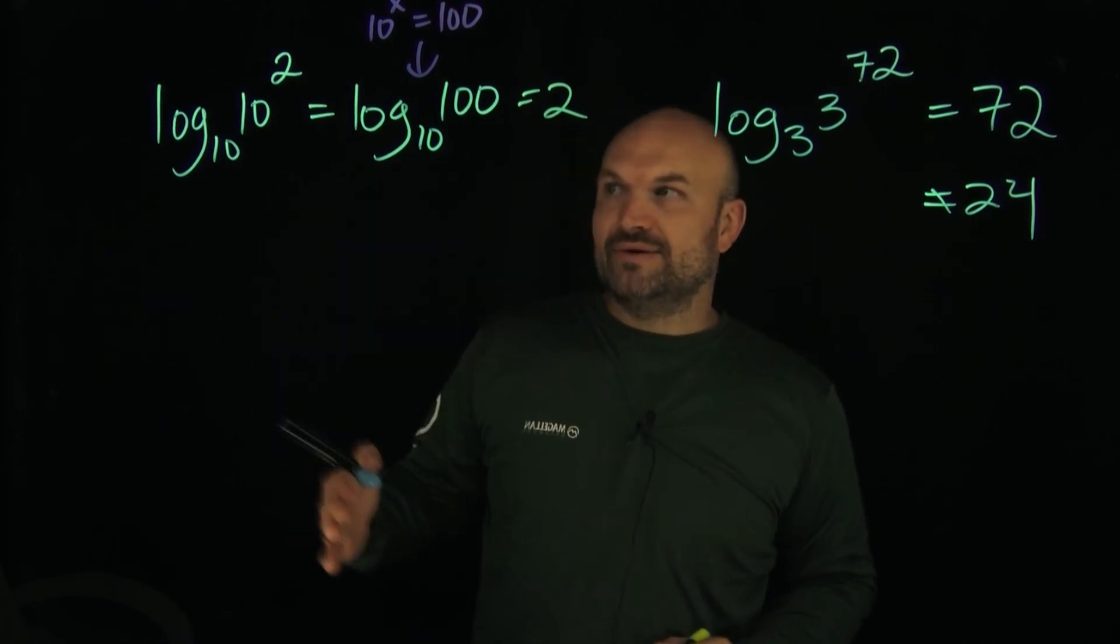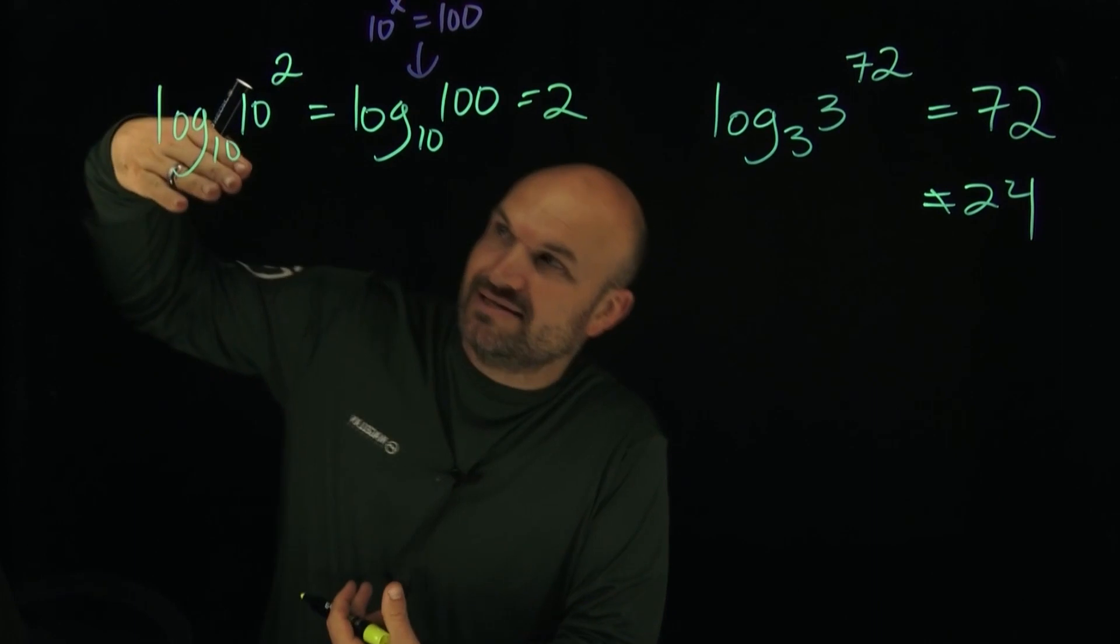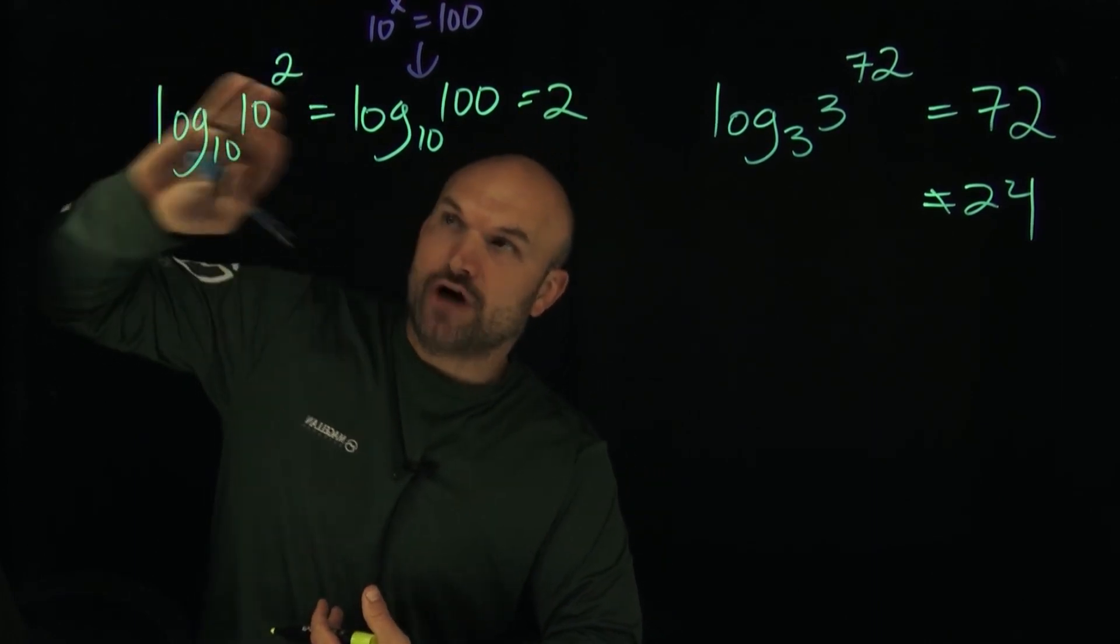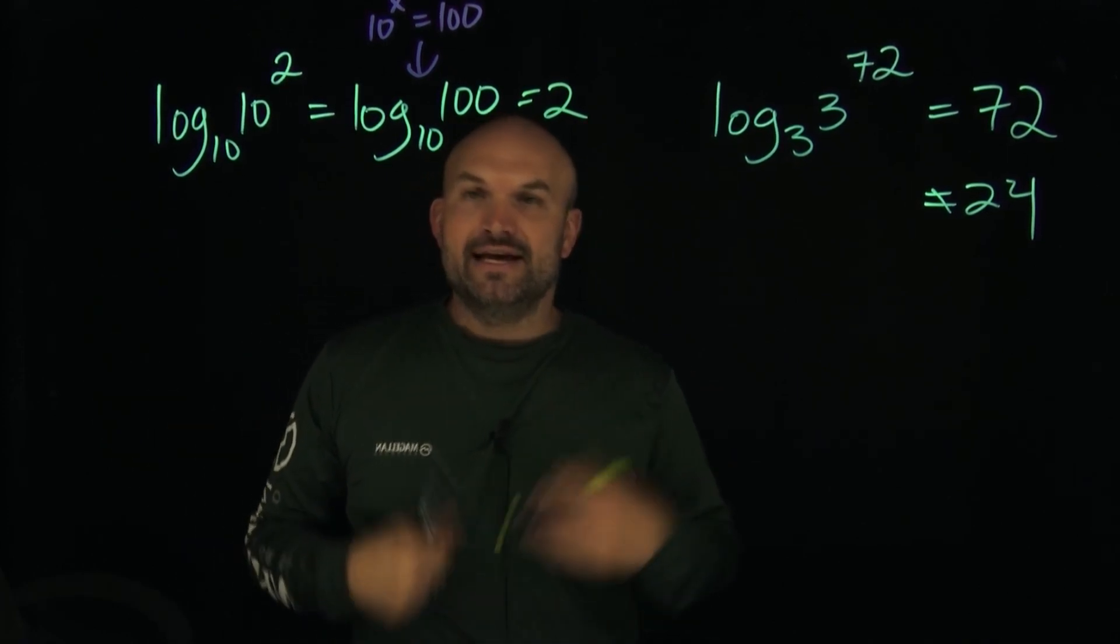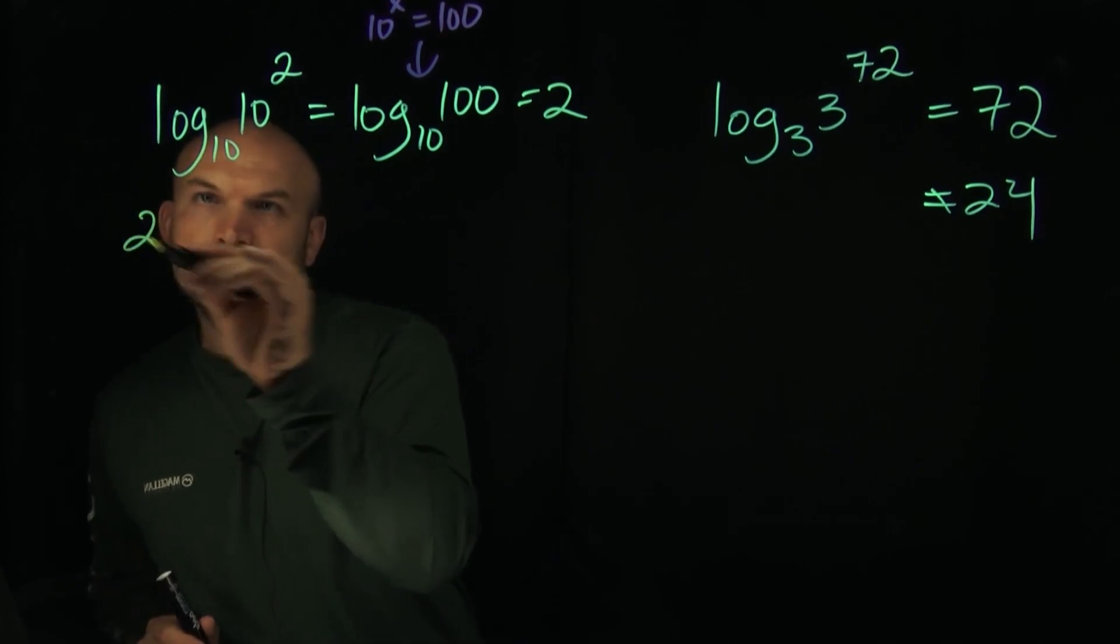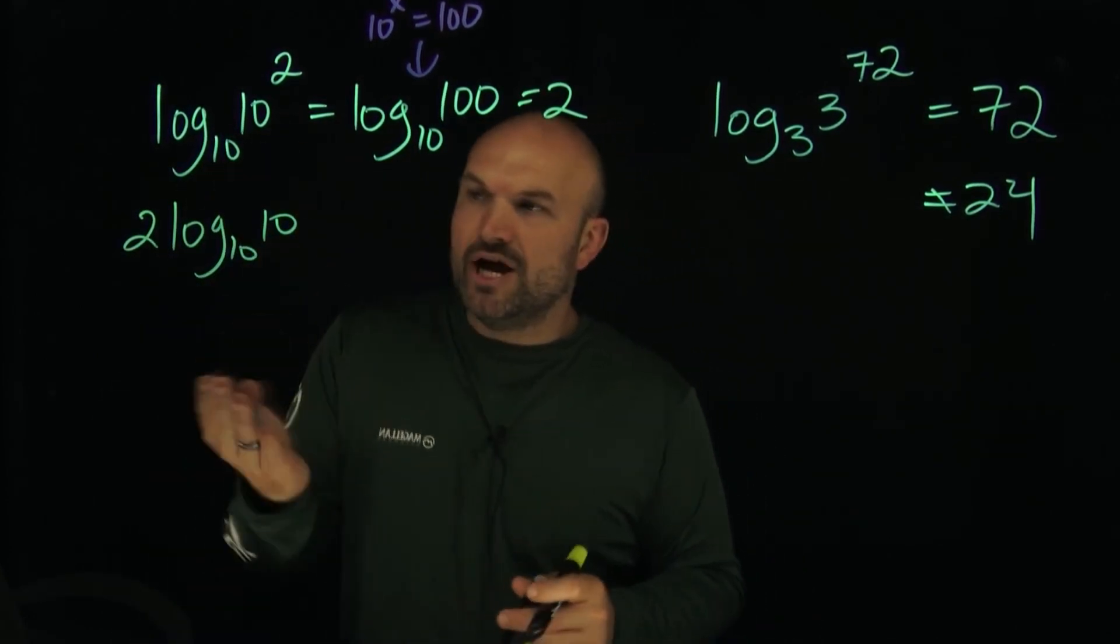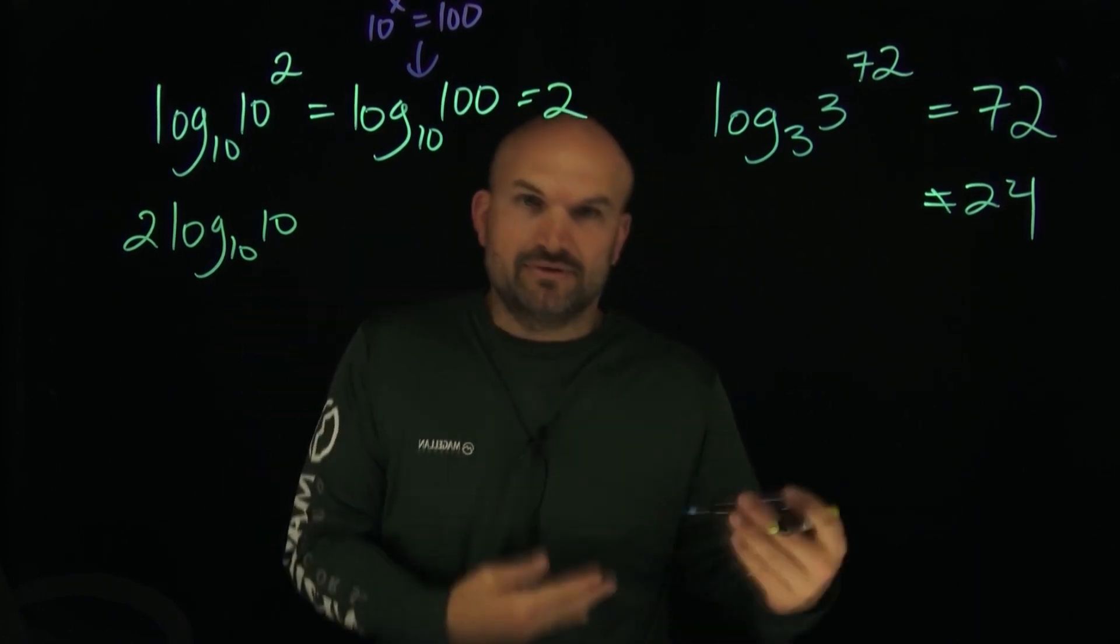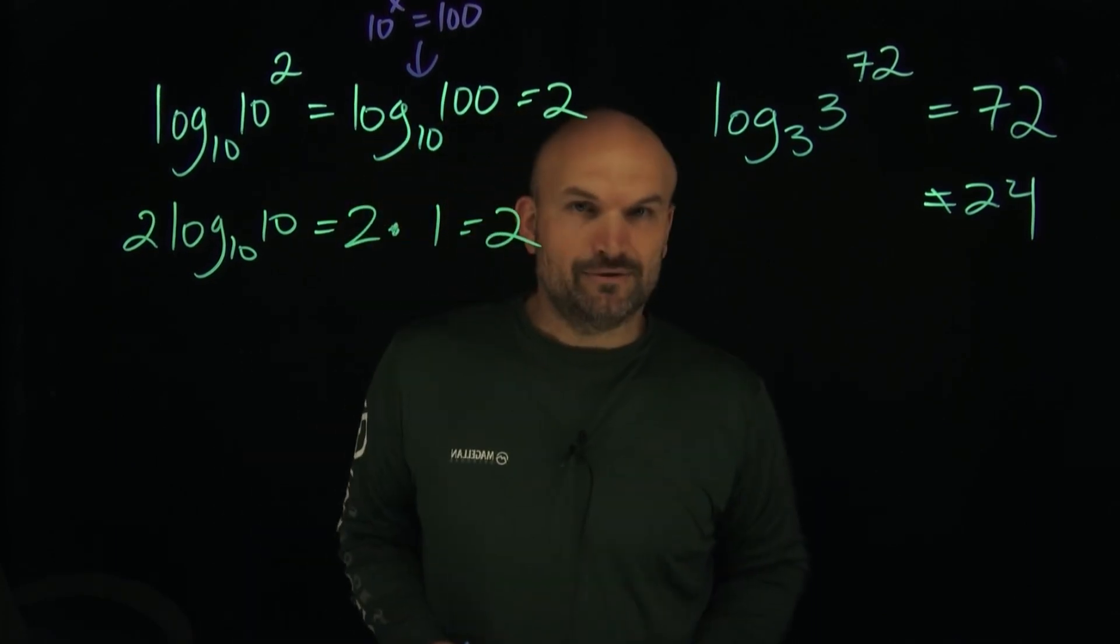But that is all we're simply doing. And if you look at a faster way to understand what's going on, when you have the base and the argument are the same, and your argument is being raised to a power, then that is going to be your value. Because another way you can look at this is just by using the power rule of logarithms. You can also rewrite this as 2 times the logarithm base 10 of 10. And we know 10 raised to what number equals 10? 1, right? So we could simplify this to 2 times 1. Therefore, that's just going to equal 2.